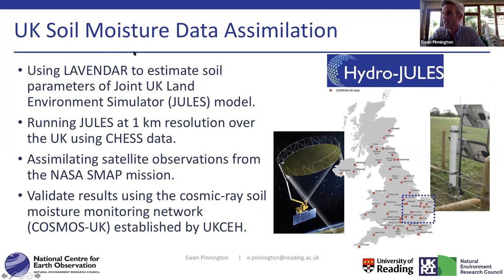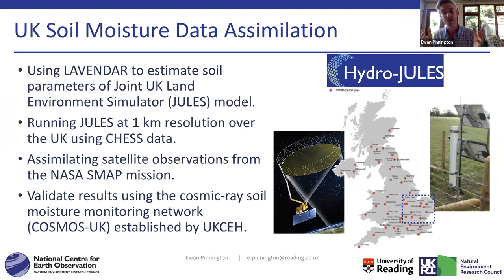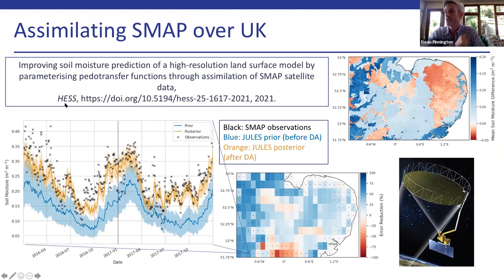Initially we've done work over the UK looking at soil moisture data assimilation. We're running JULES at a one-kilometer resolution over this spatial domain, assimilating observations from the NASA SMAP mission. Over the UK we have lots of in-situ validation, and in particular we're using these fairly new cosmic-ray neutron probes — COSMOS probes. These give us field-scale soil moisture estimates, much more representative of our one-kilometer model grid than traditional point soil moisture sensors, covering roughly 500–600 meters in diameter.